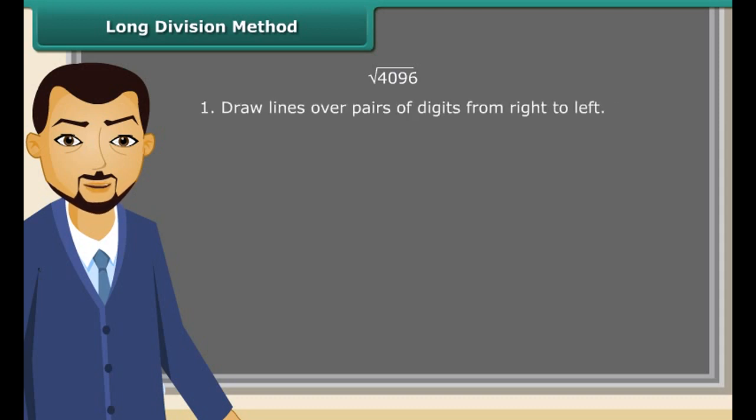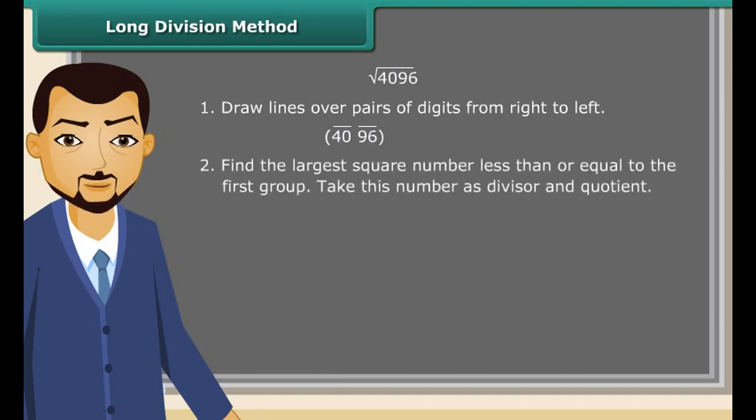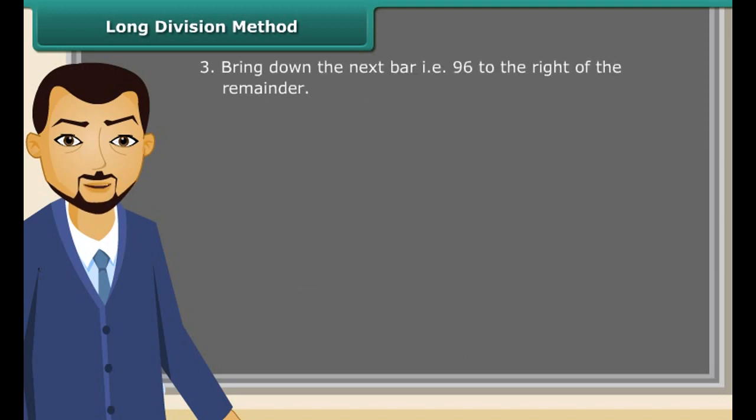For large numbers, the prime factorization method of finding square root becomes difficult. So, we use long division method. Let us look at the steps. First of all, draw lines over pairs of digits from right to left. Next, find the largest square number less than or equal to the first group. That is 40.